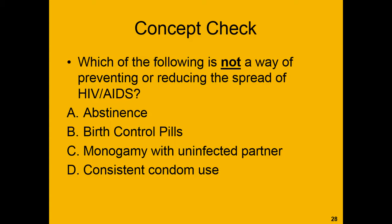Concept check: Which of the following is not a way of preventing or reducing the spread of HIV-AIDS? A, abstinence; B, birth control pills; C, monogamy with an uninfected partner who is also monogamous with you; and D, consistent condom use. If you don't know the answer, that is okay — go ahead and rewind the video, or you can check your notes or your textbook. Please go ahead and pause it and then get me an answer.